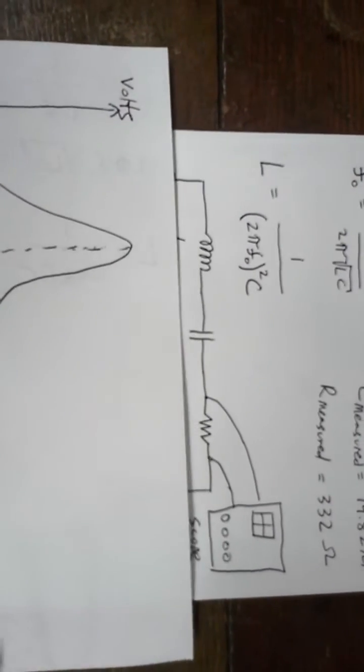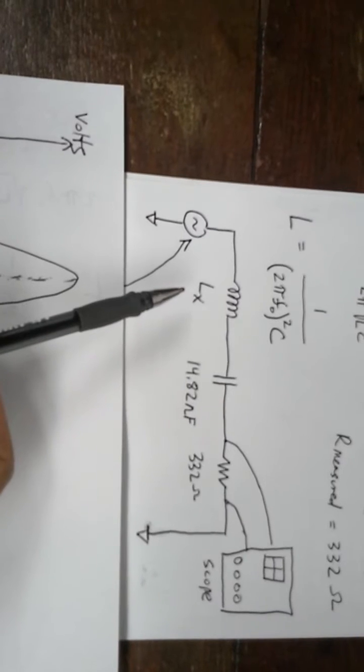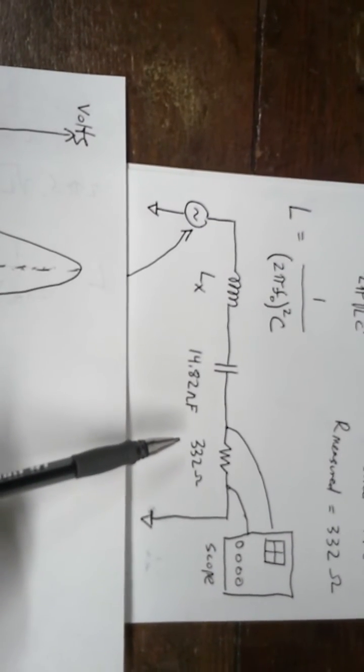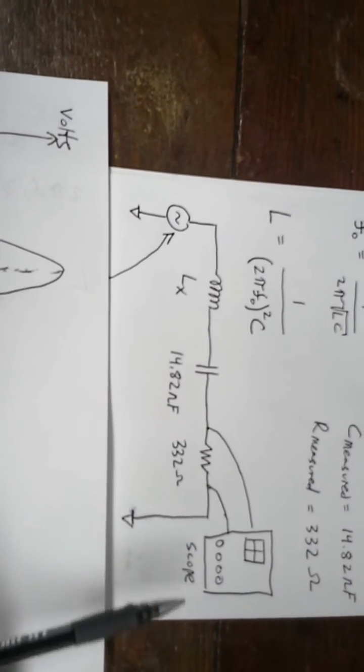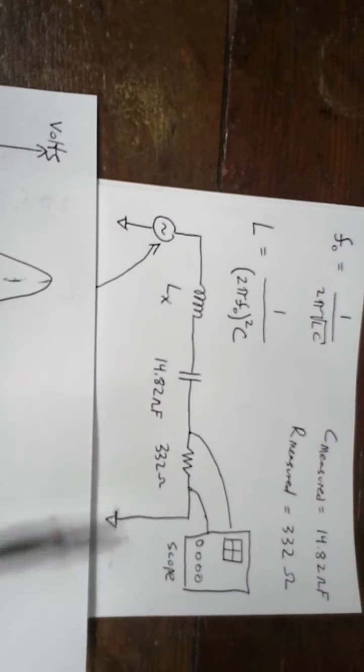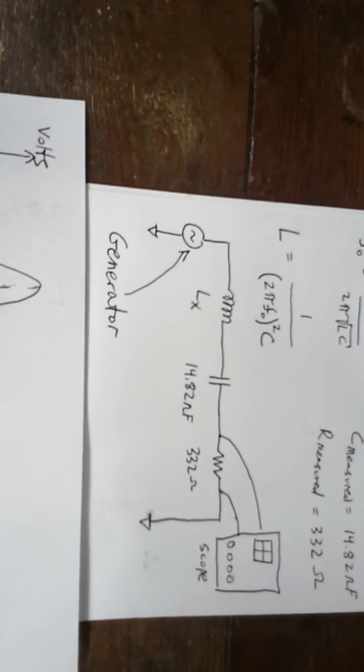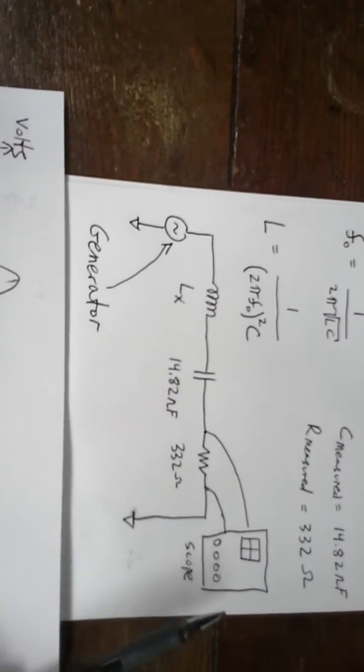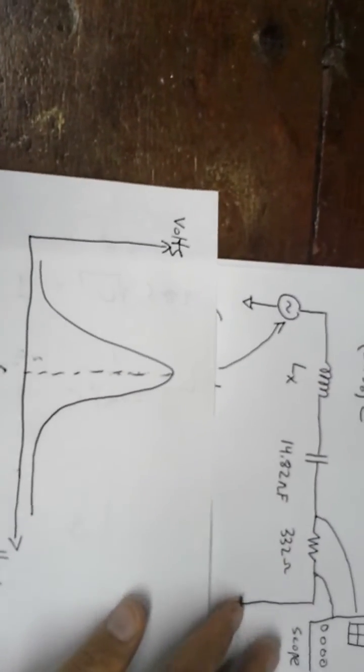And here is a tank circuit, which is a series tank circuit. So LX is the unknown inductor. This is the capacitor, and this is the resistor. And I have a scope and a multimeter set up to measure frequency. What I'm going to do is I'm going to sweep the frequency coming out of this generator here, and look at the response across the resistor on the scope to find the maximum. When I get the maximum response, I know I found the resonant frequency.